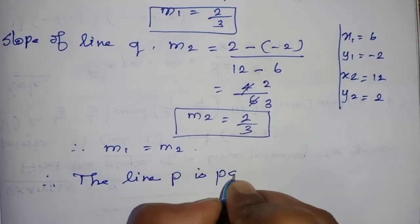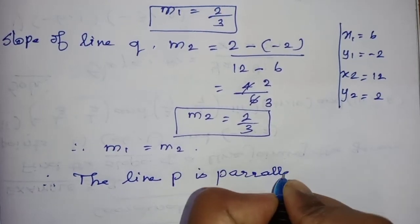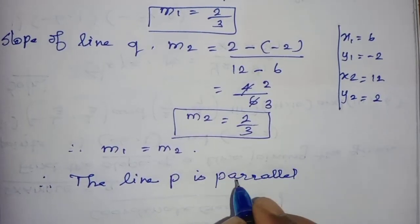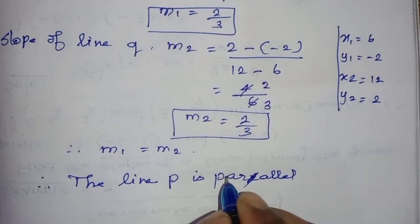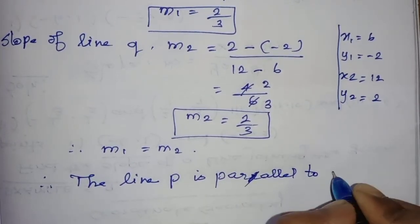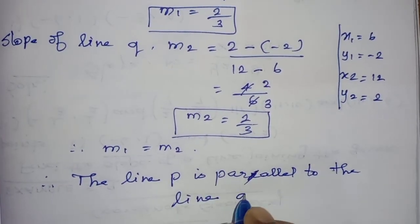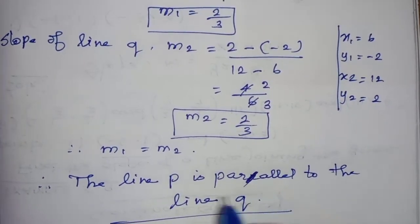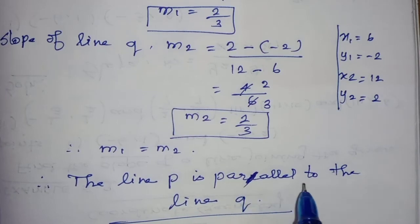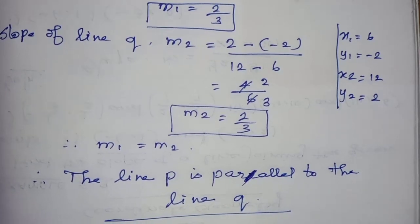Since M1 equals M2, P is parallel to the line Q. So the line P is parallel to the line Q.